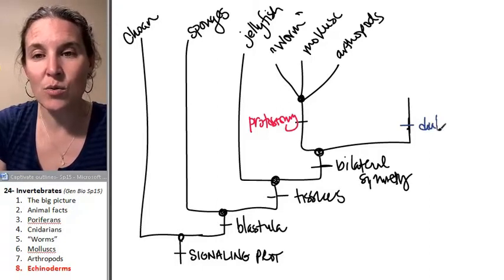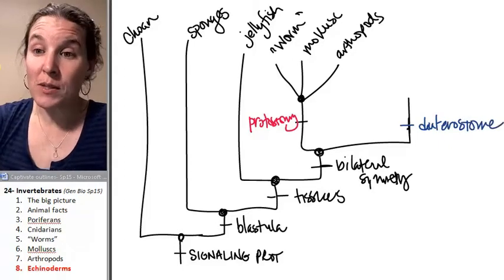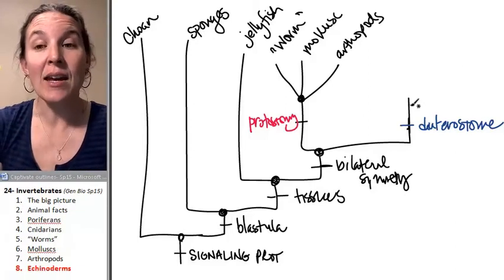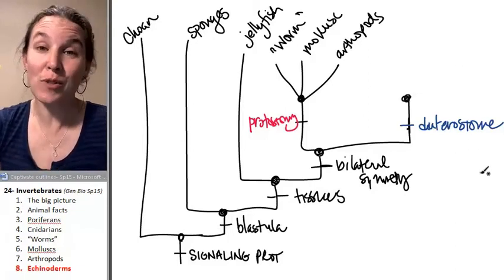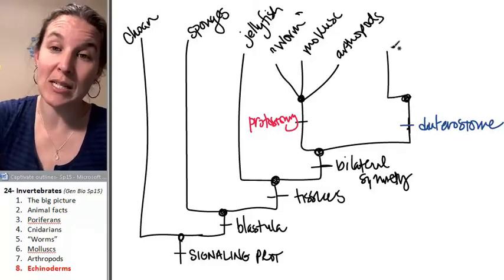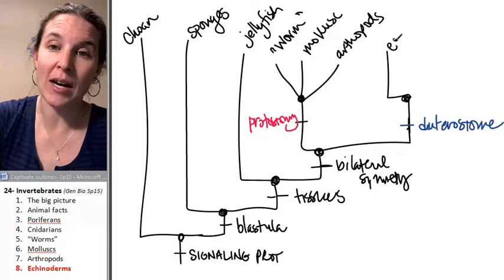Deuterostome, D-E-U-T. Deuterostomes, the blastopore becomes the anus, and there are two groups of deuterostomes that we're going to look at. The first group, and we're going to spend a little bit of time right now talking about them, are echinoderms.